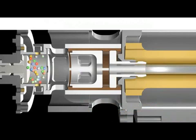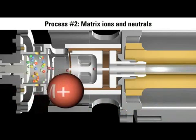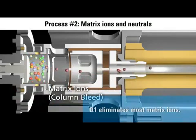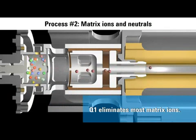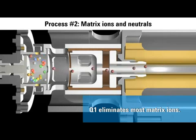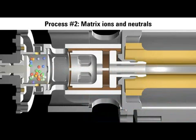Parallel processes are occurring simultaneously for the molecules from the sample matrix and instrument background like column bleed. The quadrupole analyzer performs the critical task of mass filtering to isolate the analyte's ions from the majority of these ions. Chemical noise often remains after the first quadrupole, but the selectivity of MS/MS removes this final source of interference.